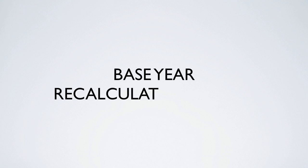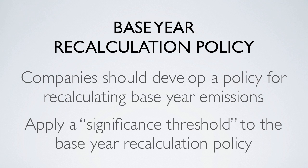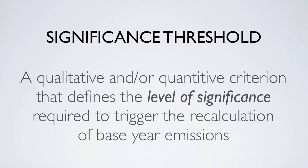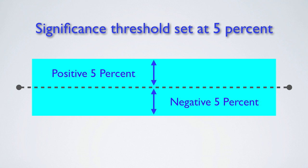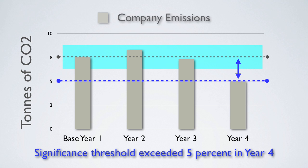The base year recalculation policy. In order to address this issue, companies should develop a policy for recalculating base year emissions, and clearly articulate the basis and context for any recalculations. Many companies choose to apply a significance threshold to their base year recalculation policy. The significance threshold is a qualitative and/or quantitative criterion that defines the level of significance required to trigger the recalculation of base year emissions. For example, a company might specify a significance threshold of 5%, meaning that changes are only considered significant if they represent more than 5% of the company's total annual emissions.